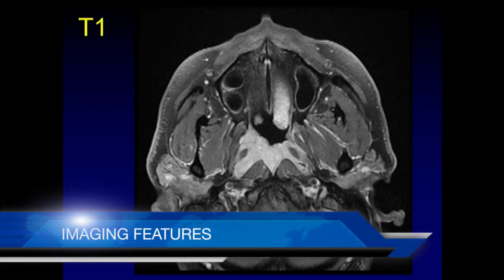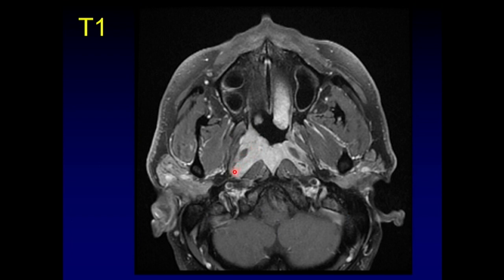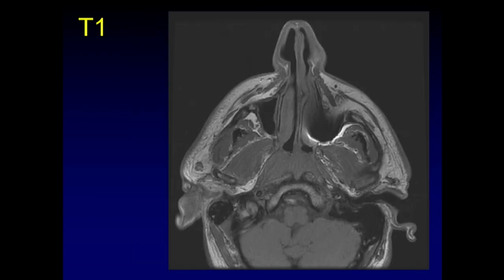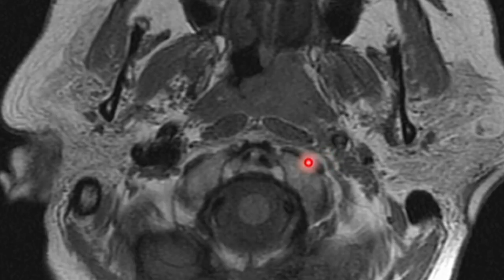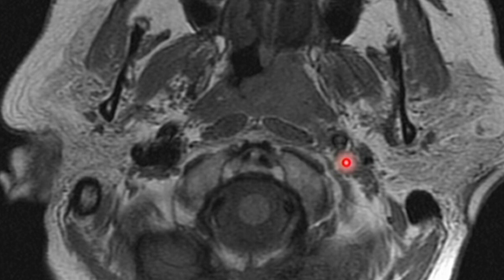For T1 disease: enhancing tumor fills and thickens the fossa of Rosenmuller, extending across midline with uniform enhancement, but surrounding anatomy is preserved — the torus is still visible. This is classic T1. On unenhanced imaging, note the preservation of surrounding fat planes — that's very important for confirming T1 disease. On another T1 example, there is a thin line of fat in front of the prevertebral muscles; if that fat line is intact, there has been no posterior spread into the prevertebral musculature.